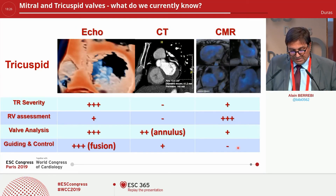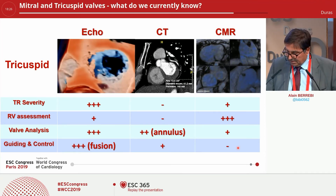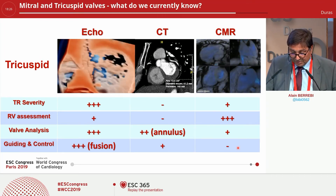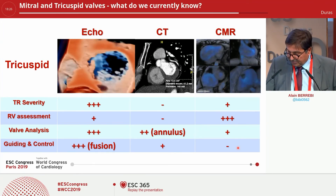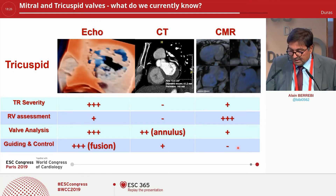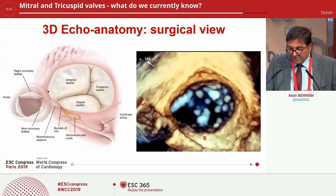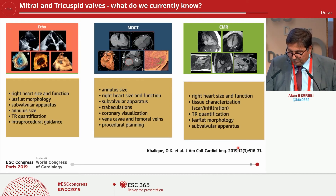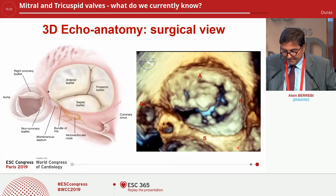In summary for tricuspid regurgitation, echo is key for TR severity. Pepe told you the different grading — the modern grading, including the torrential. Guiding and control is very important. Valve analysis, we have seen that. For CT scan, it is very important for sizing. And for MRI, the right ventricular assessment is particularly key. I recommend a good summary of all the roles of multimodality imaging in the very nice issue of JACC Imaging.